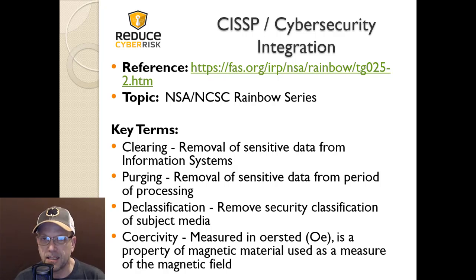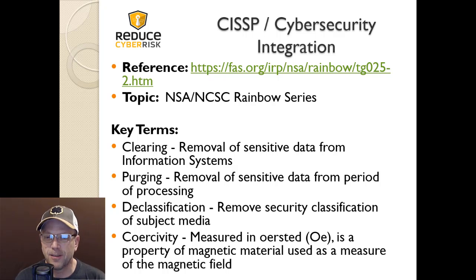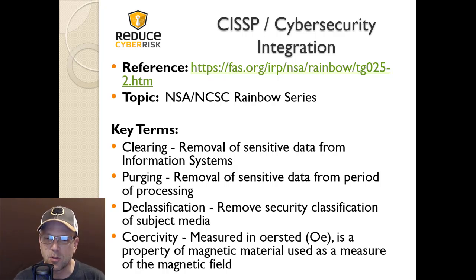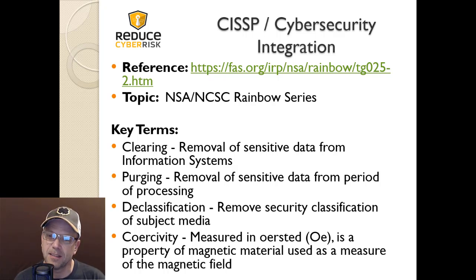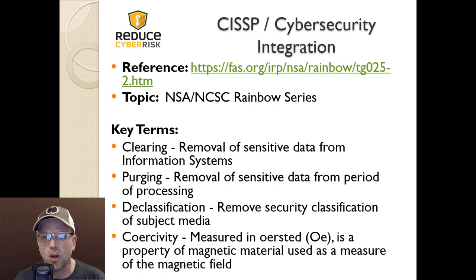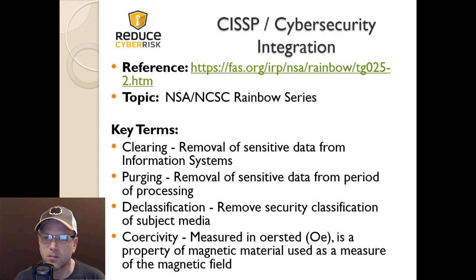Coercivity — measured in Oersteds (OE) — is a property of magnetic material used as a measure of the magnetic field. There are different types of magnetic tapes: Type 1 is 350 OE, Type 2 is 351 to 750 OE, and Type 3 is above 750 OE. Many data centers still use magnetic tapes for backups, so you need to keep this in mind especially as it relates to destruction.